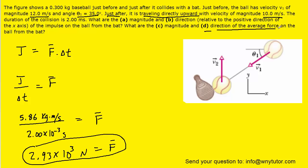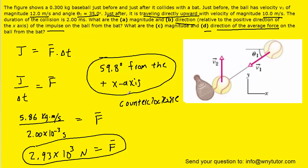For part D, all we need to note is that the direction of the average force is going to be the same as the direction of the impulse. And so since we had found the direction of the impulse to be 59.8 degrees from the positive x axis, that's going to be the same angle or the same direction of the average force. So this would be the correct answer to part D. Note again that we would be measuring that counterclockwise from the positive x axis. So in short, the direction of the average force is the same as the direction of the impulse.